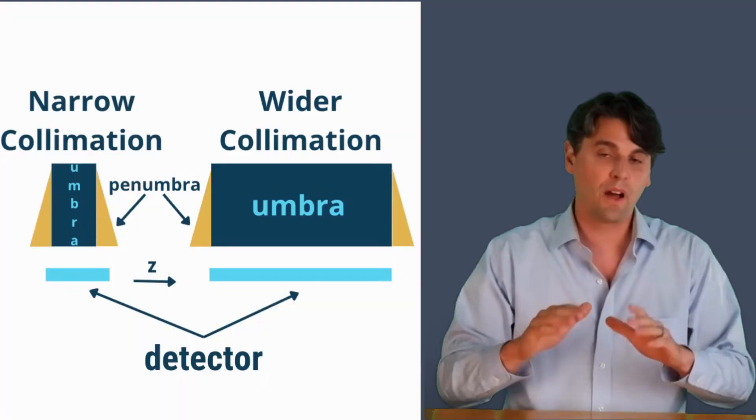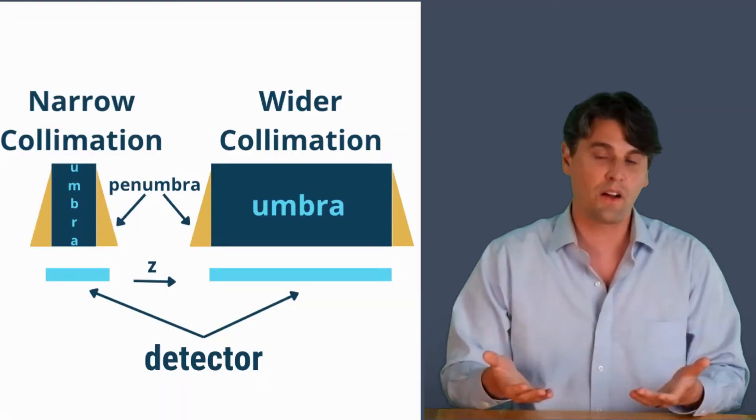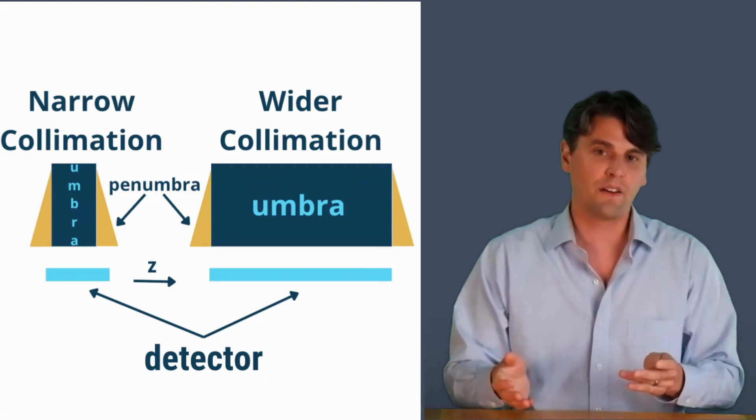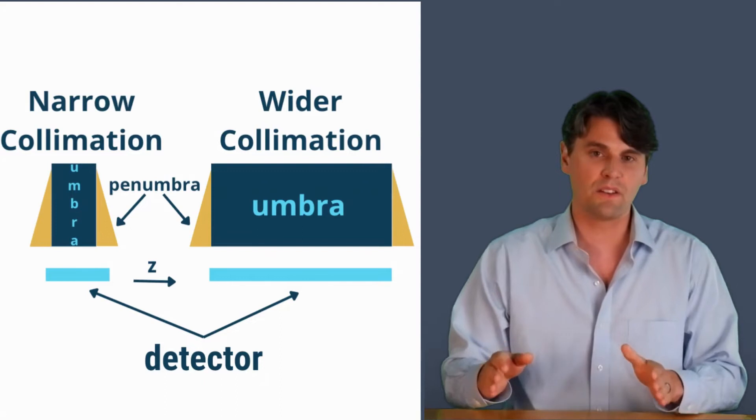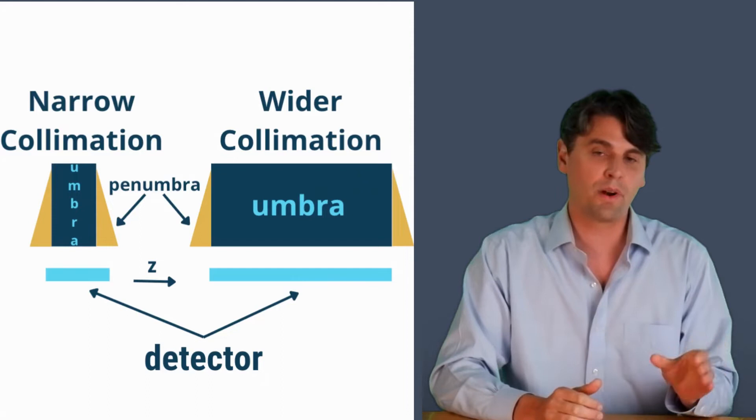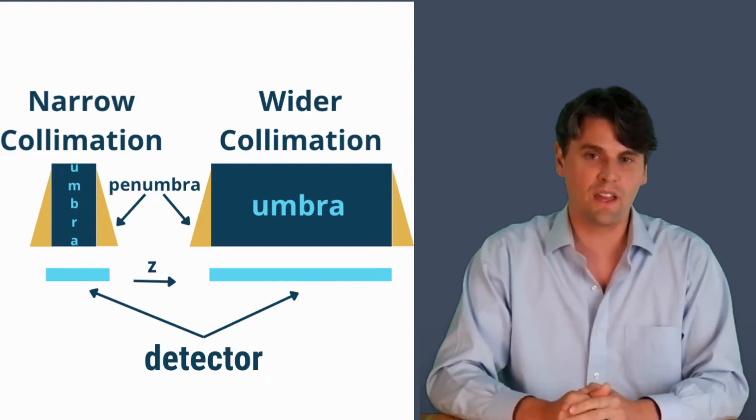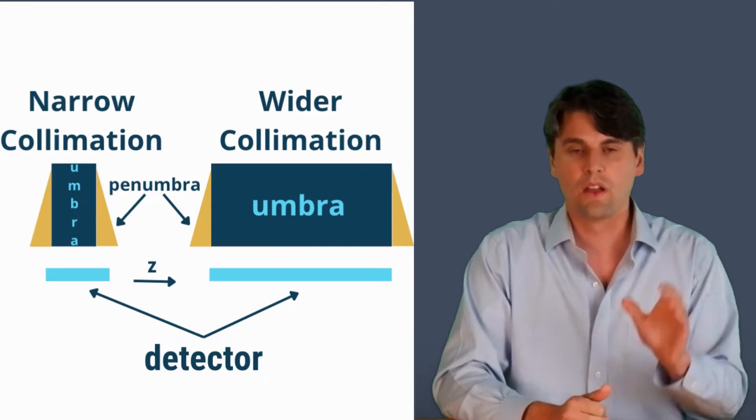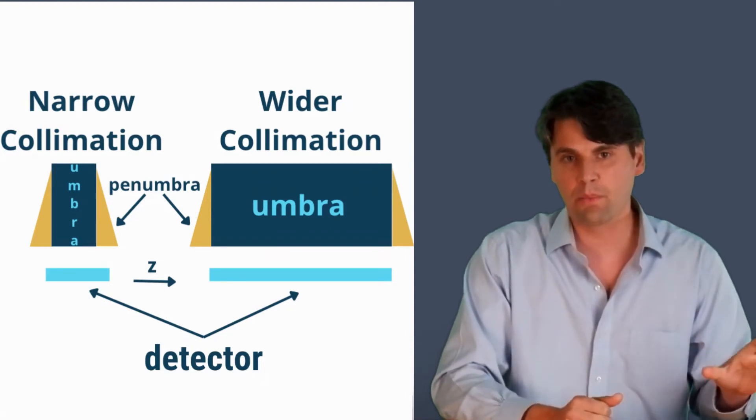Penumbra is the region in which there is some x-ray irradiation happening, but there's not enough to make a good quality image that's consistent with the rest of the images. Because of this, there's some of the penumbra that has to be outside of the imaging region that is essentially wasted dose.